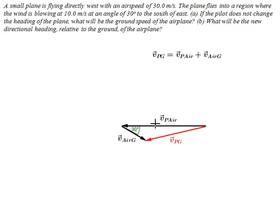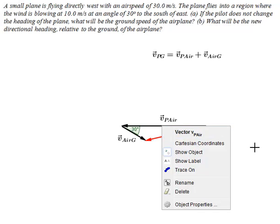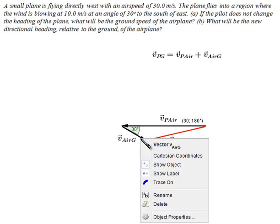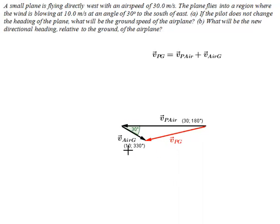We have effectively modeled and solved this problem using GeoGebra. The important thing is for you to know how to model problems, because very often you can let machines do the actual calculations for you — though you will need to be able to do these calculations yourself as well. We could use geometry and trigonometry, but it will be easier to use the more general method of vector components. For now, let GeoGebra do the calculations. The velocity of the plane relative to the air is 30 meters per second at 180 degrees, and the velocity of the air relative to the ground is 10 meters per second at 330 degrees — that is, 30 degrees below east.